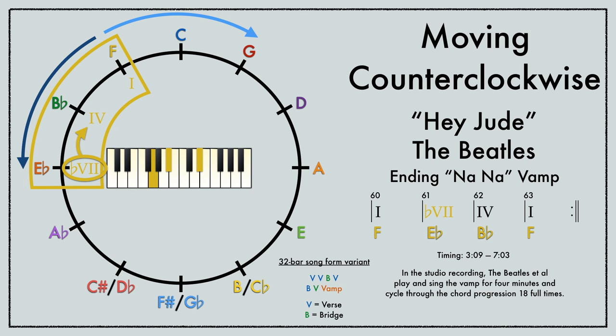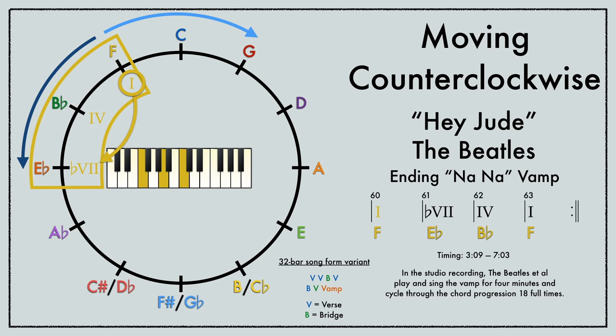After a standard song form, the Beatles and their assembled audience sing na-na for four minutes over this repeated chord progression: 1, b7, 4, 1.